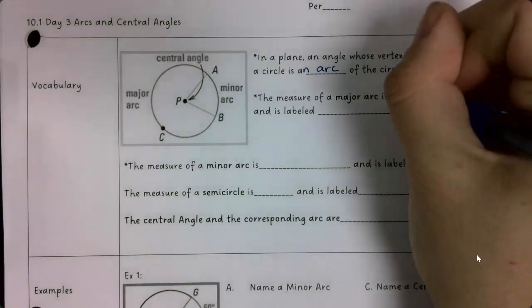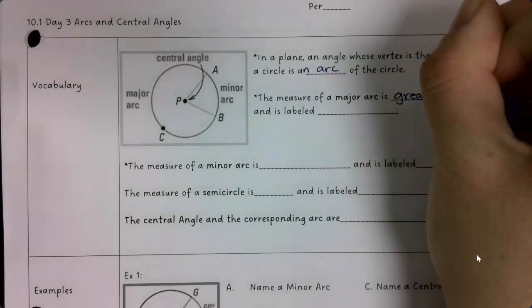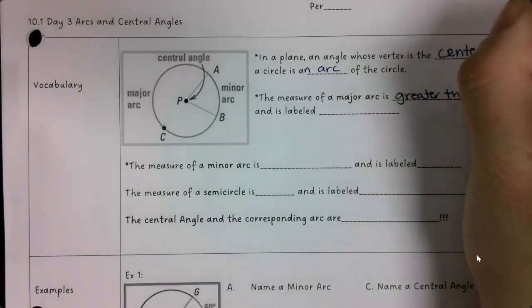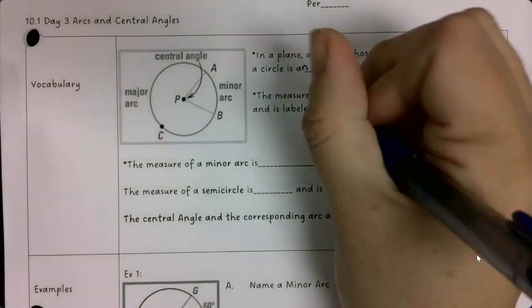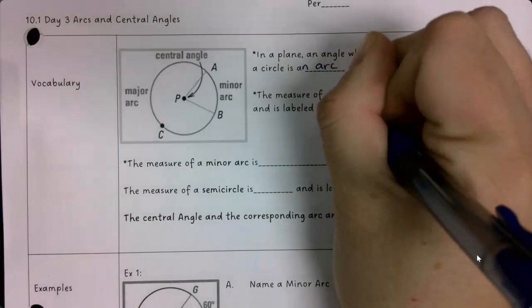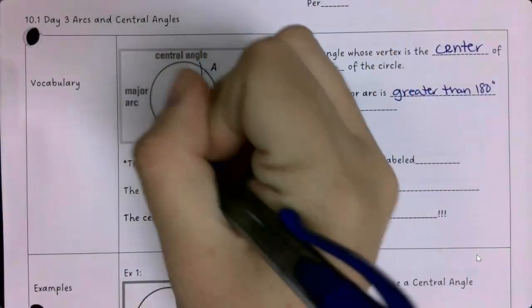The measure of a major arc is greater than 180 degrees. And in this picture would be labeled ACB. So it's the big part around the circle.